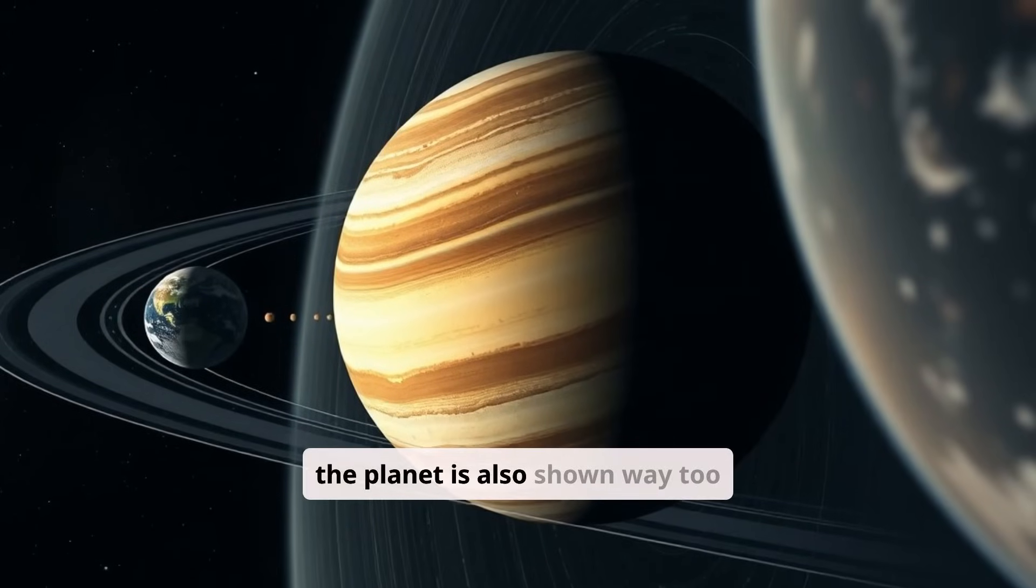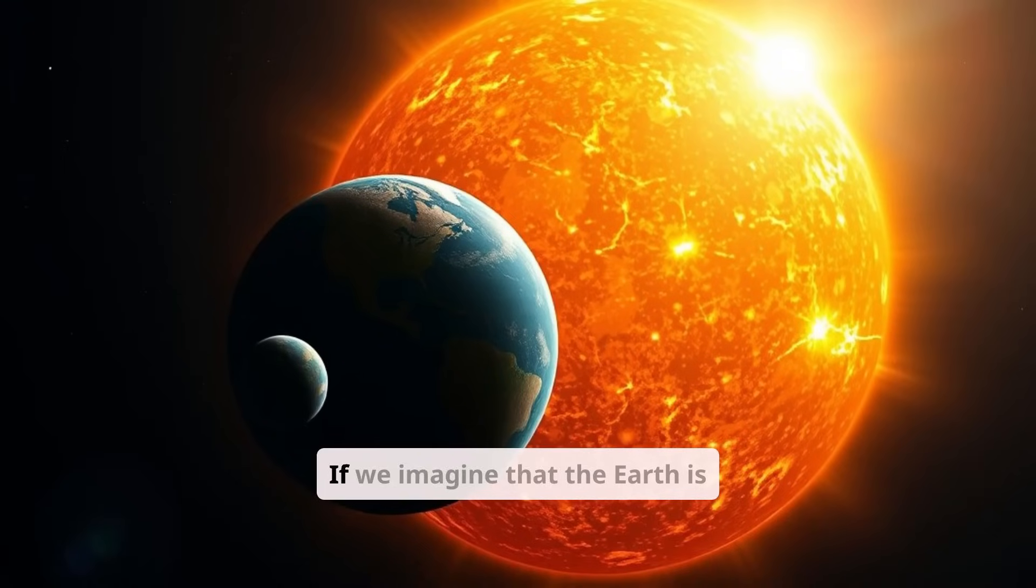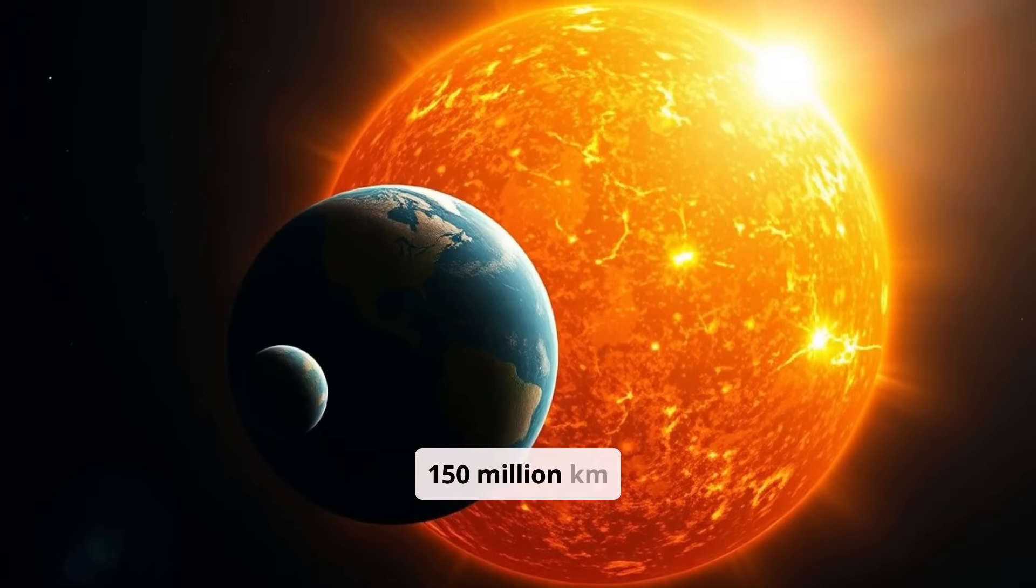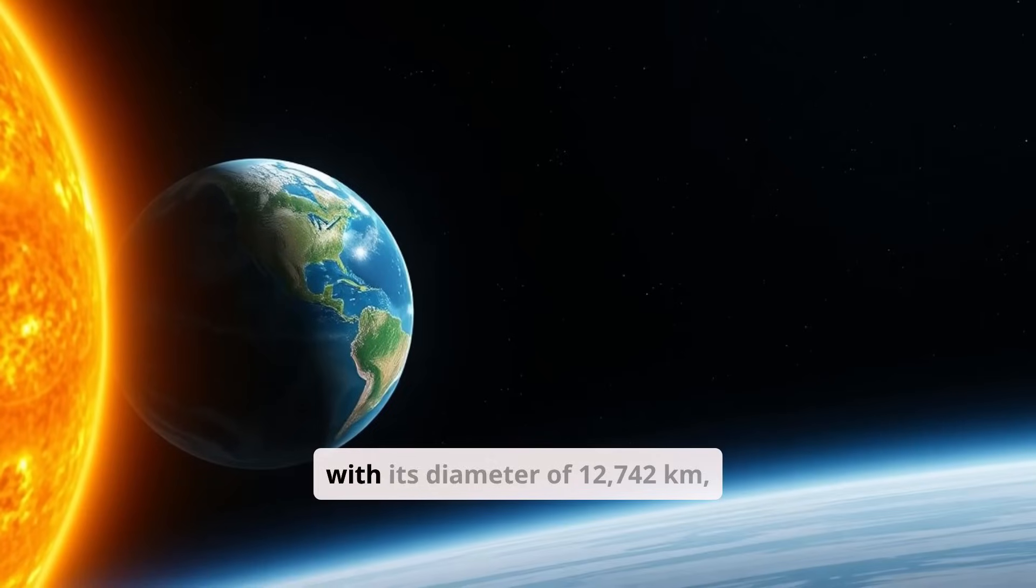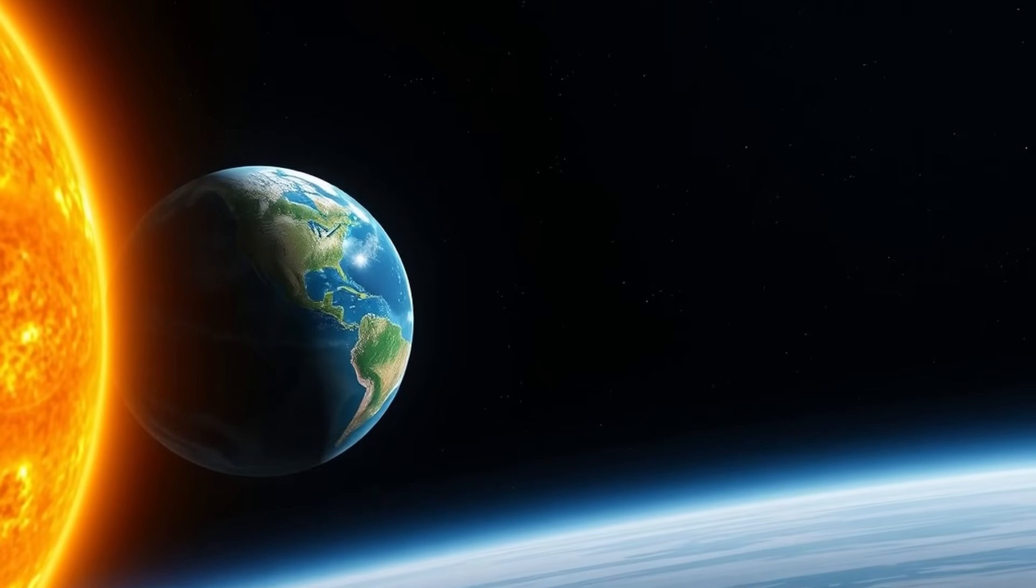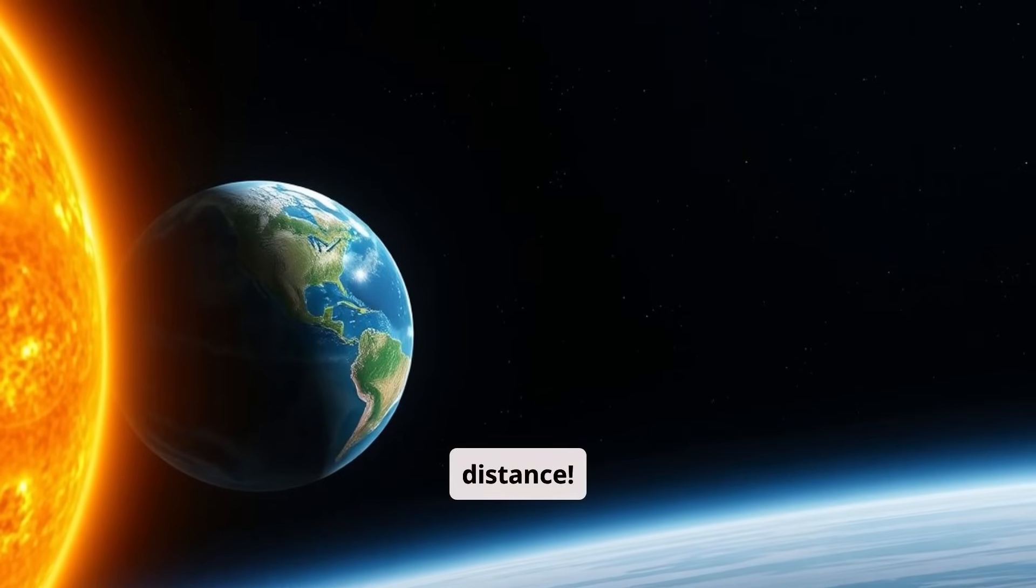On various diagrams, the planet is also shown way too close. If we imagine that the Earth is 150 million kilometers away from the sun, with its diameter of 12,742 kilometers, it would fit almost 12,000 times along that distance.